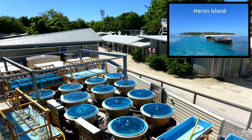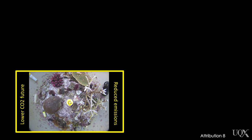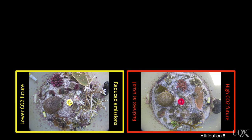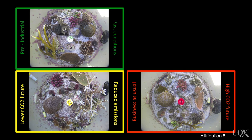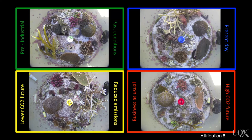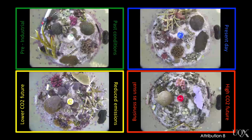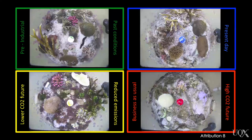In an experiment with Associate Professor Sophie Dove and our research team on Heron Island, we exposed small sections of coral reefs growing under different scenarios of the future — under different amounts of change with respect to temperature and carbon dioxide. Some tanks were exposed to a reduced emissions future, others to conditions consistent with the business-as-usual future. We also looked at what would happen without atmospheric CO2 pollution, which we refer to as the pre-industrial treatment — essentially the world that Darwin and early scientists saw. We compared each of these to present-day treatments.